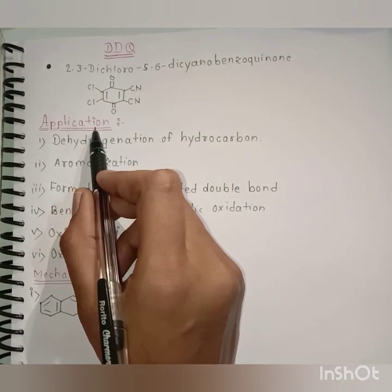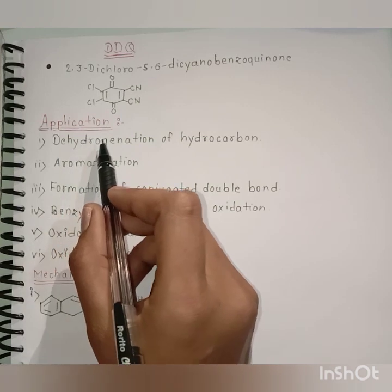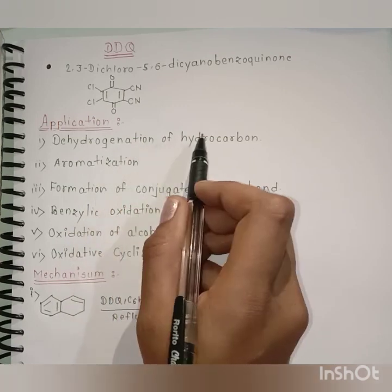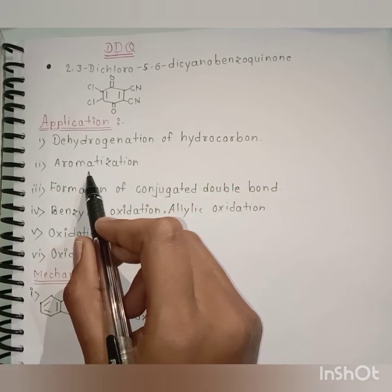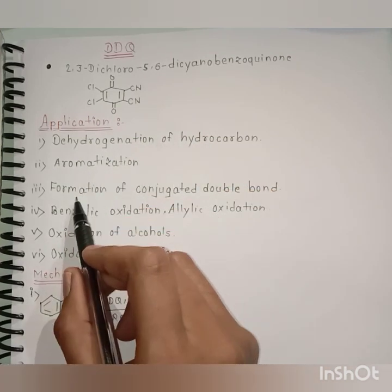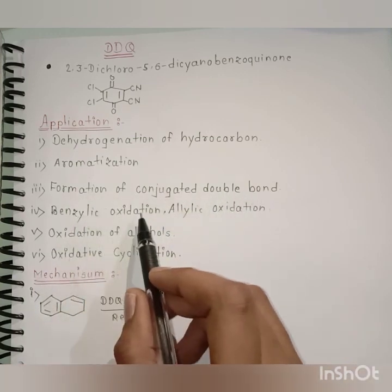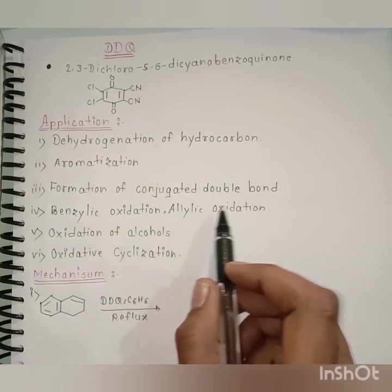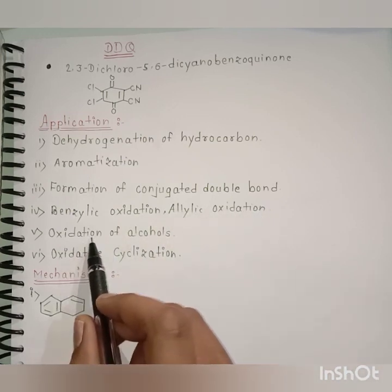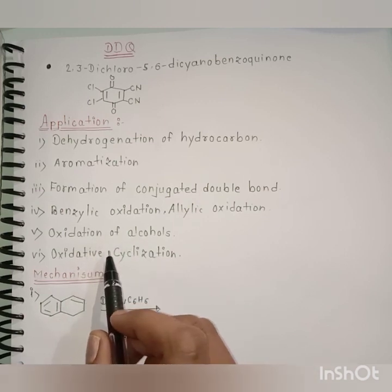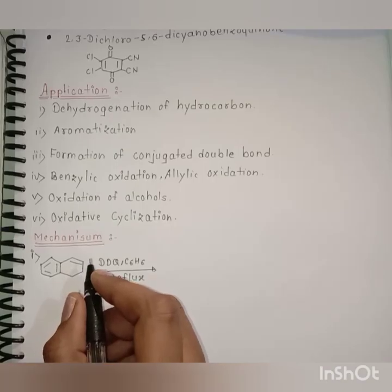There are various types of applications of DDQ. First is the dehydrogenation of hydrocarbons. Second is aromatization. Third is the formation of conjugated double bonds. Fourth is benzylic oxidation or allylic oxidation. Fifth is oxidation of alcohols. And the sixth is oxidative cyclization. Now let's discuss the mechanism.